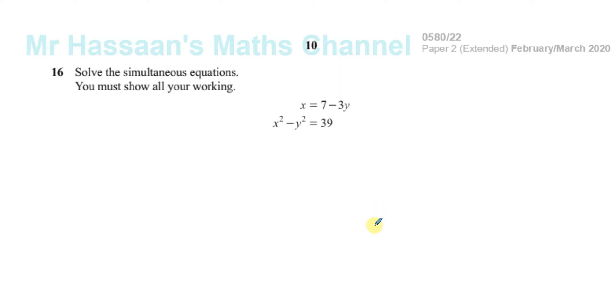Question number 16 from paper 2 of February-March 2020, CIE Cambridge Exams. Solve the simultaneous equations, you must show all your working.